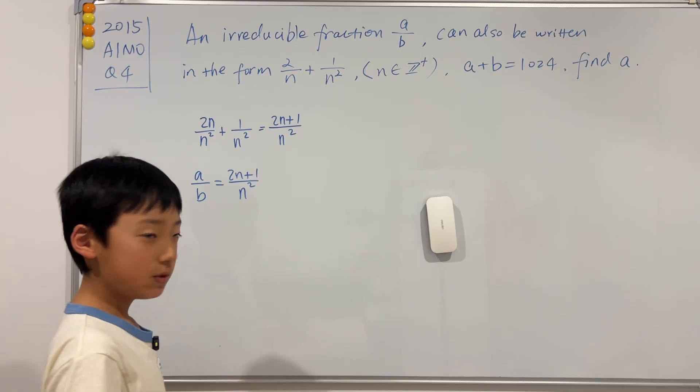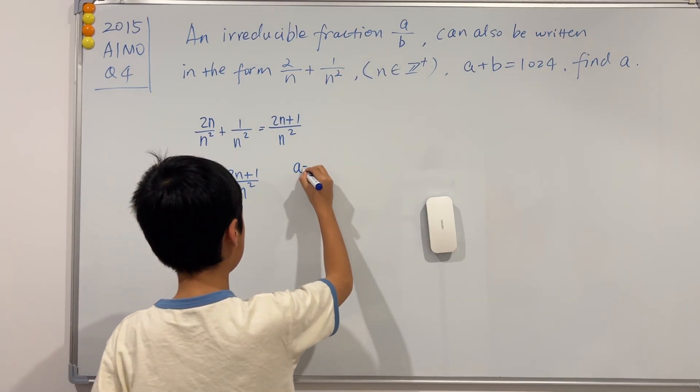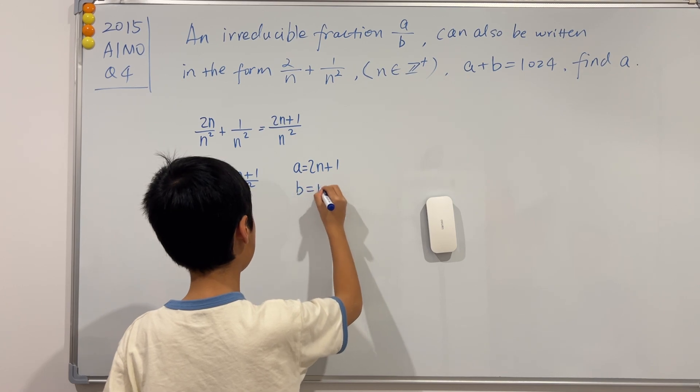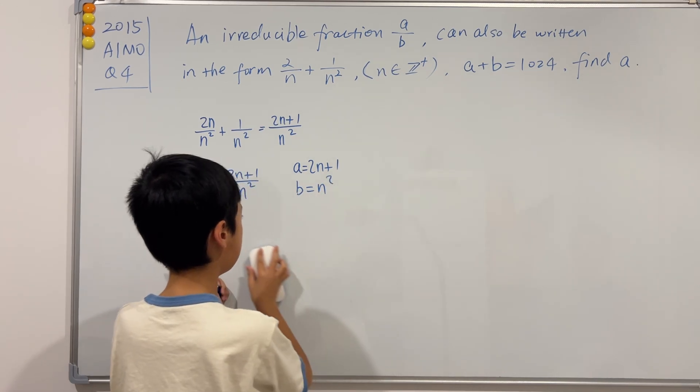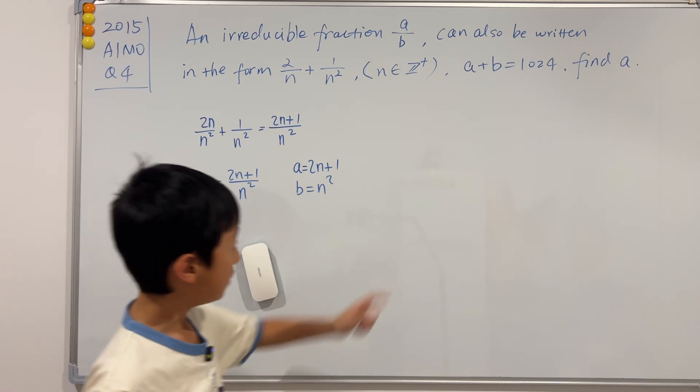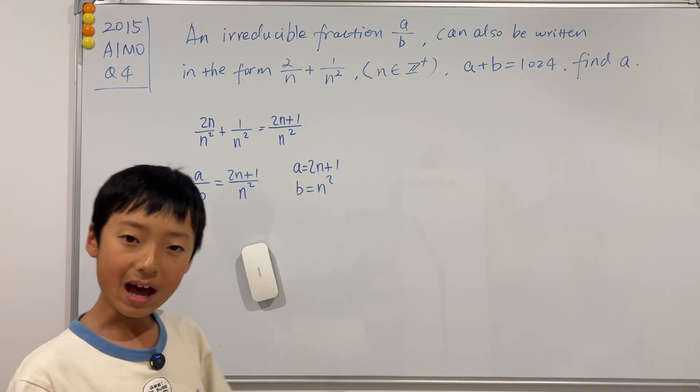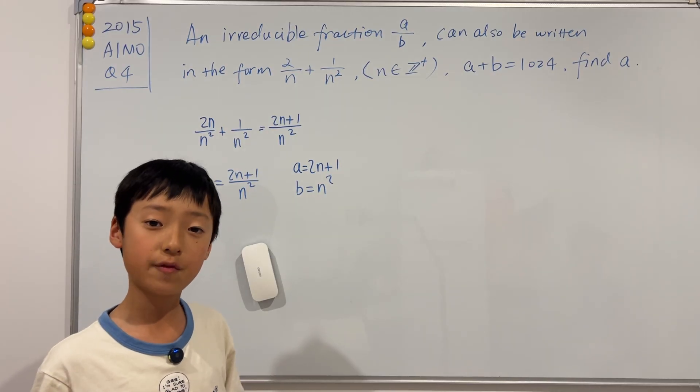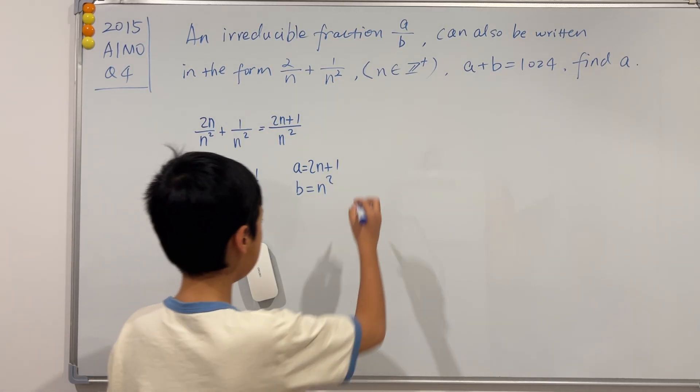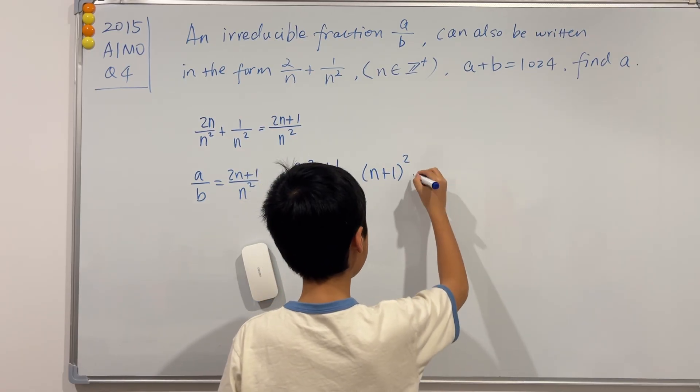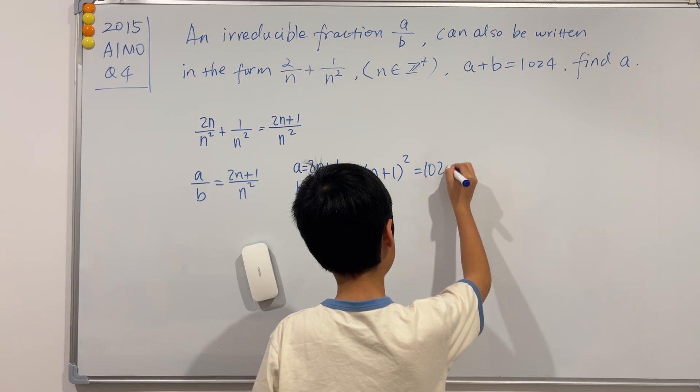Now that we know that A is just equal to 2N plus 1 and B is equal to N squared, we know that A plus B is 1024. If we add these two numbers up, you actually notice it is a perfect square. It is actually the square of N plus 1 squared, and this is just equal to 1024.